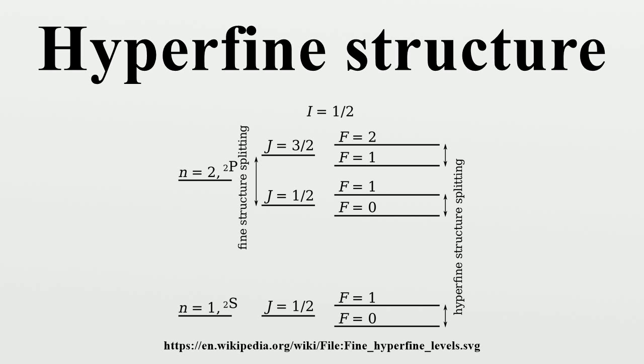Where i and j are the tensor indices running from 1 to 3, x i and x j are the spatial variables x, y and z depending on the values of i and j respectively. Delta i j is the Kronecker delta and rho is the charge density. Being a three-dimensional rank 2 tensor, the quadrupole moment has 3 squared equals 9 components.